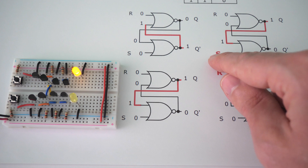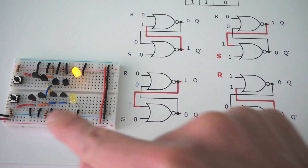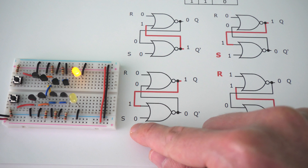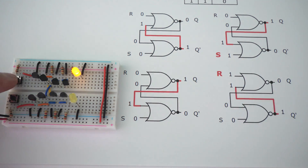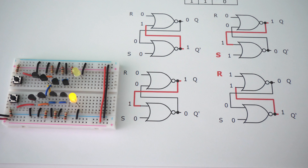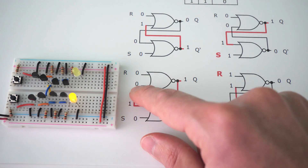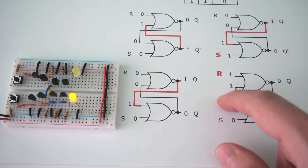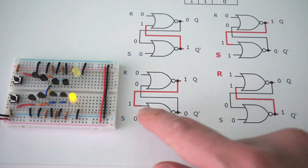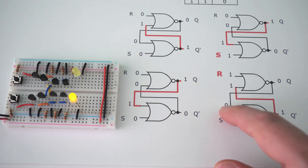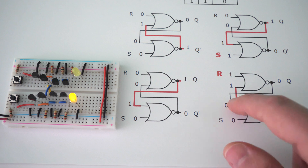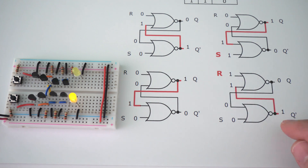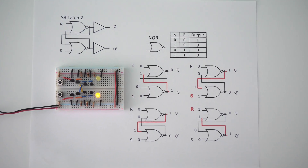Whenever we press reset, our output turns off. Previously both inputs to the top NOR gate were zero, so its output was on. Now one of them is a one, so this output is going to turn off. And the input of our bottom NOR gate used to be on, but now they're both off, so this output is going to turn on. Now our inverse output is on and our regular output is off. And that's how SR latch 2 works.